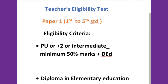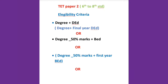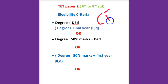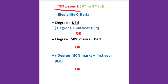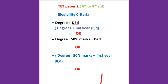Now let us move into the eligibility criteria for TET Paper 2, which is for aspirants who wish to teach classes from 6th to 8th standard. This is related to the GPSTR exam. Those who would like to appear for GPSTR exam need to be eligible in TET Paper 2. For Paper 2, the candidate must complete a degree plus D.Ed — Diploma in Education — which is a 2-year course. The candidate can be in the final year of D.Ed, or must hold a bachelor's degree with 50% marks.